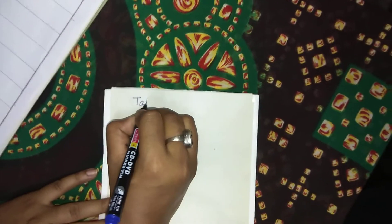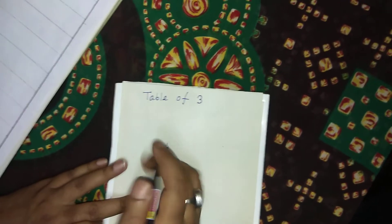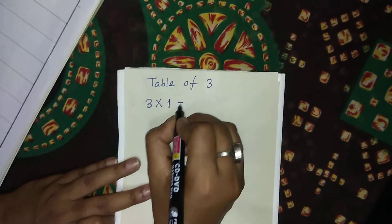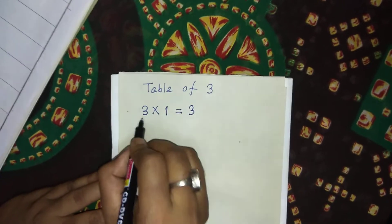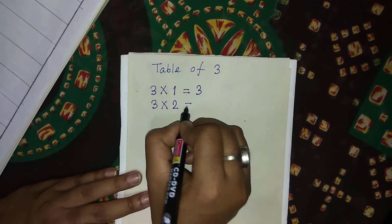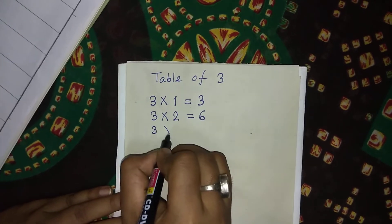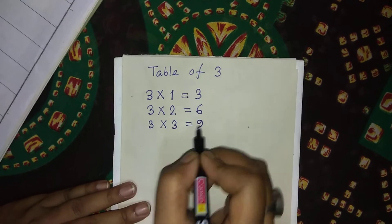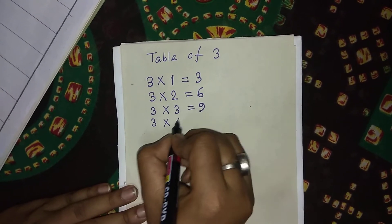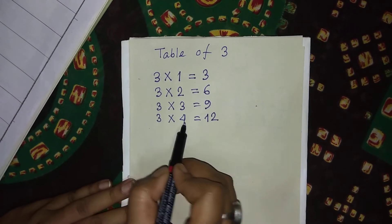Now the writing process. Now, how will we write the table of three? Three multiply by one is equal to three — three ones are three. Three multiply by two is equal to six — three twos are six. Three multiply by three is equal to nine — three threes are nine.